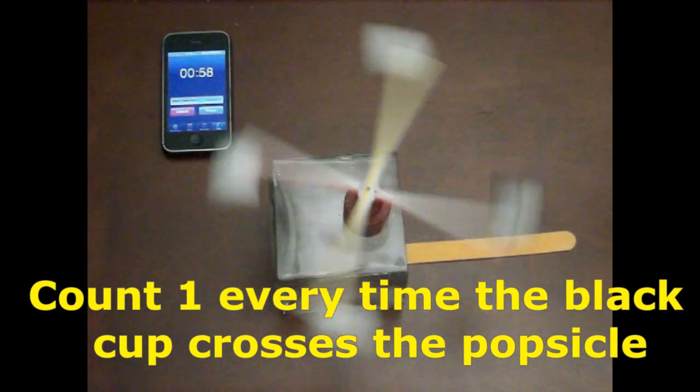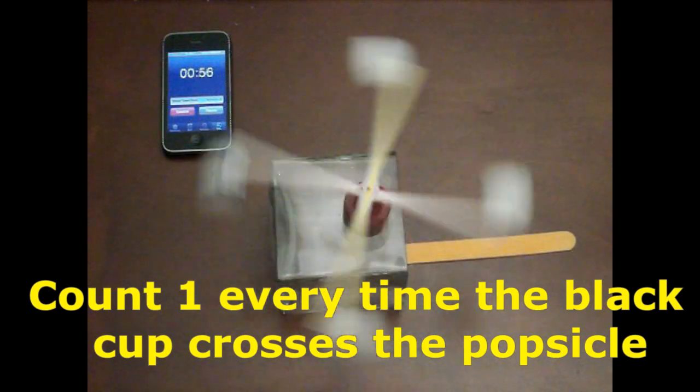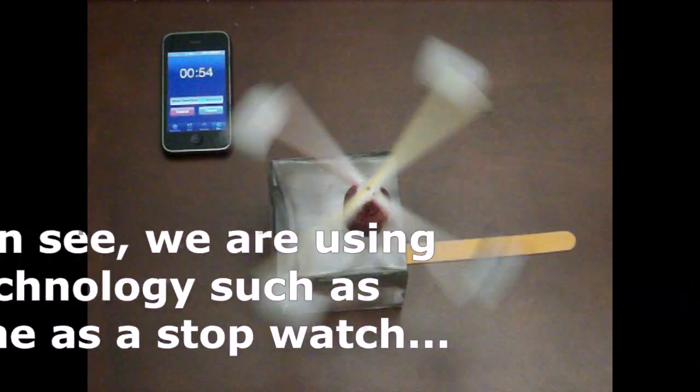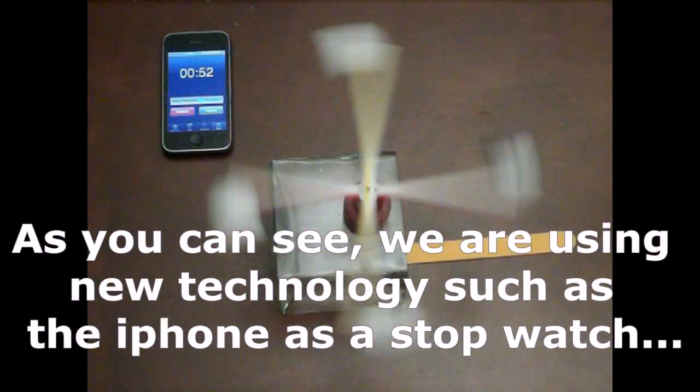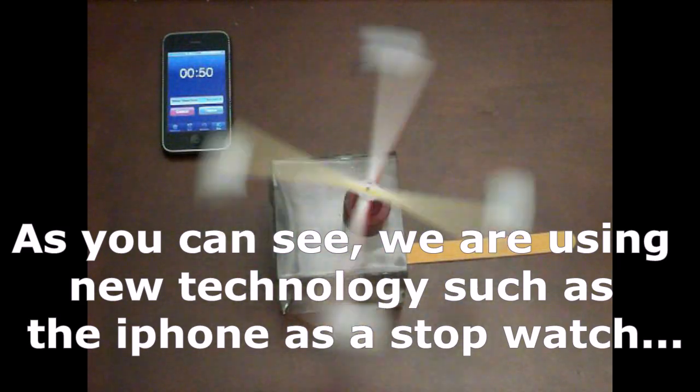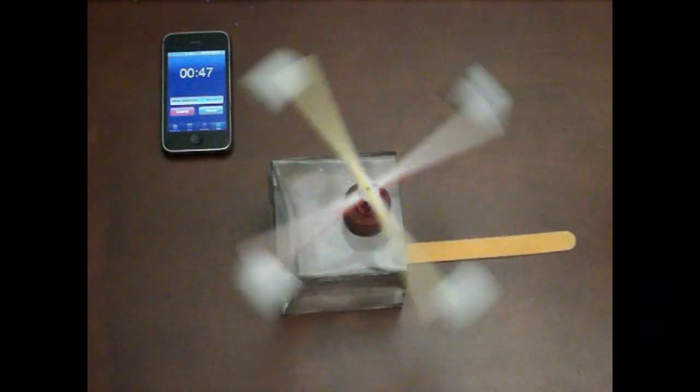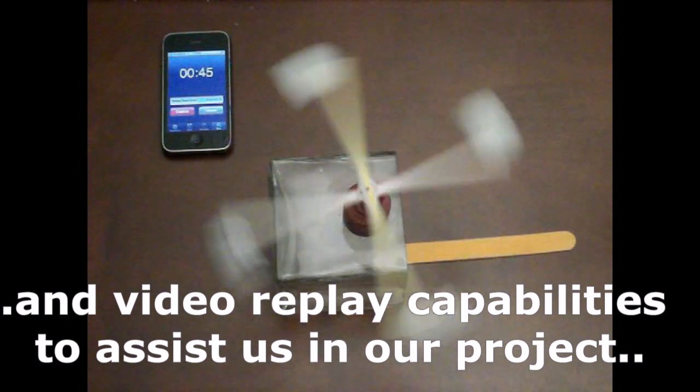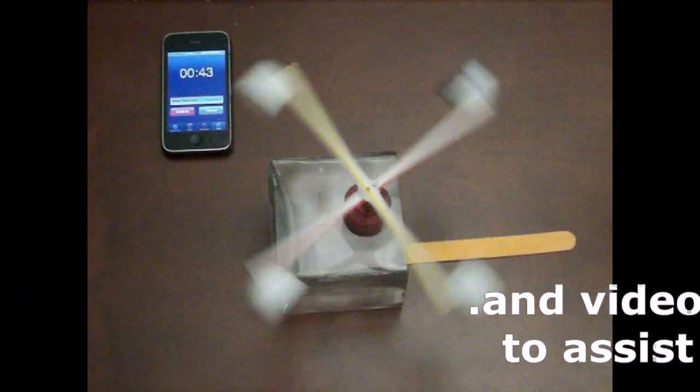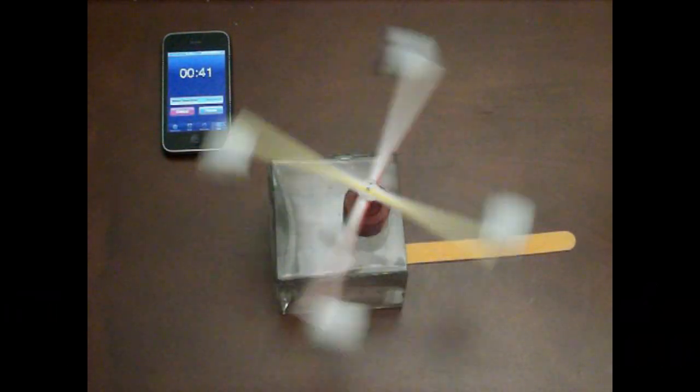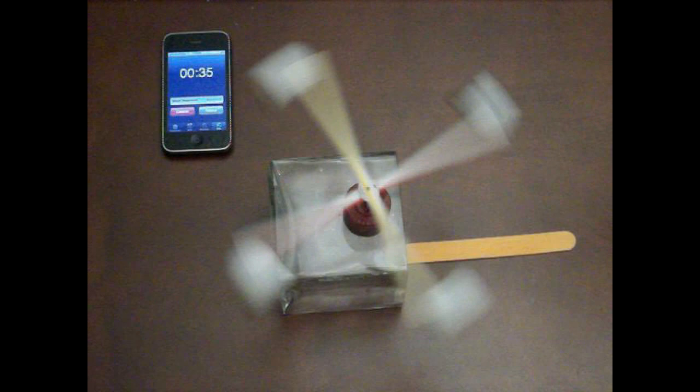Now the fan is set to the second speed, which is medium speed, and you can see that the anemometer is spinning much more faster. We will again wait until one minute. The idea is that we will watch the video in slow motion.